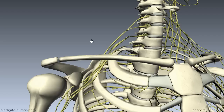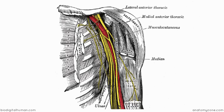The cords have an important relationship with the axillary artery — they lie around the second part of the axillary artery. As shown in this diagram, the lateral cord runs lateral to the axillary artery, the medial cord runs medial to the axillary artery, and the posterior cord runs behind the axillary artery.